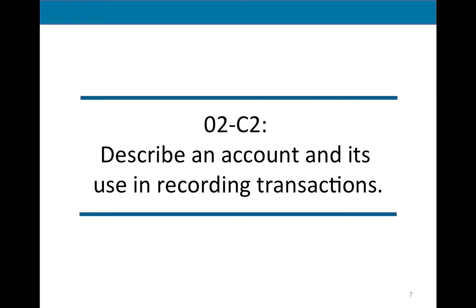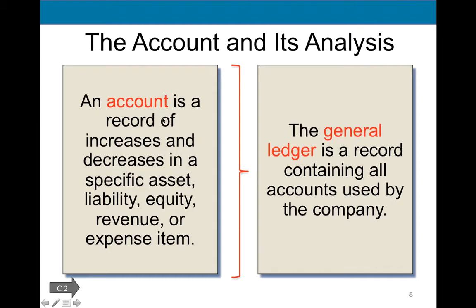Let's give a definition to an account and how we use those accounts. Accounts are like drawers where we put different transactions, and every transaction will impact at least two accounts. It is a record of increases and decreases in specific assets, liabilities, equity, revenue, and expense items. Every account will be classified as one of five groups: assets, liabilities, stockholders' equity (abbreviated SE), revenue, and expenses. The collection of all accounts put together is called the general ledger.